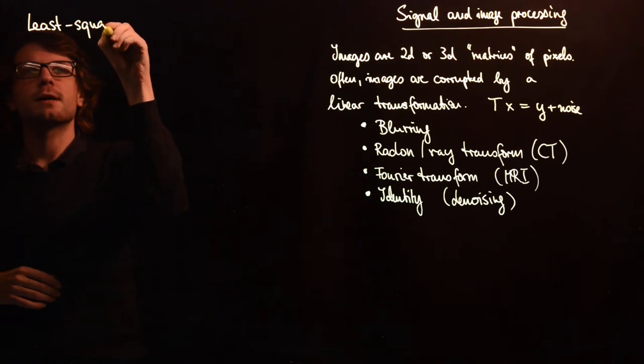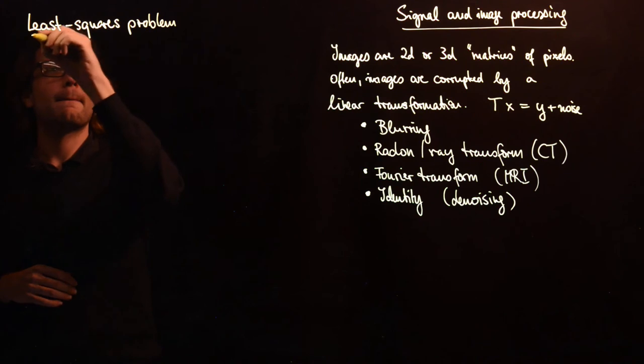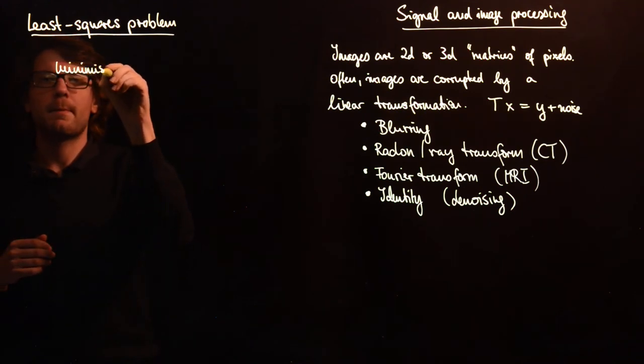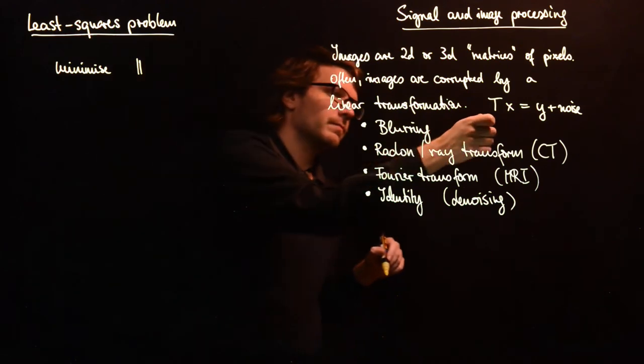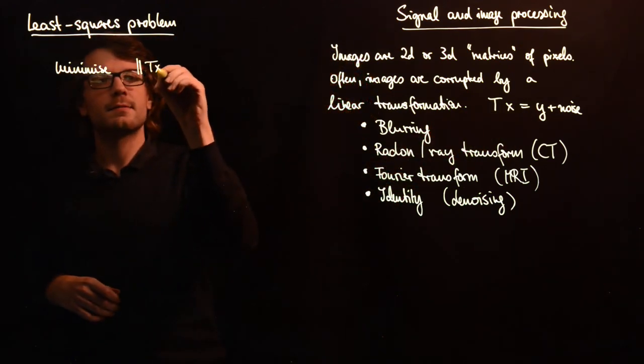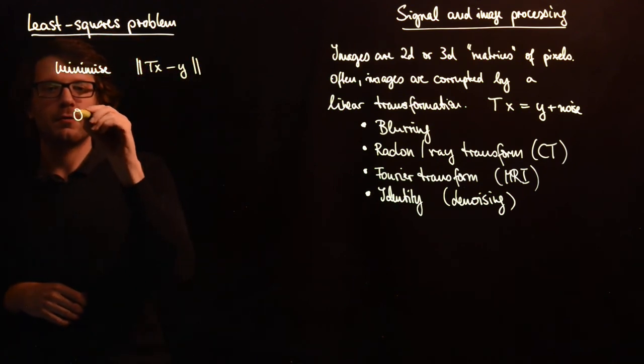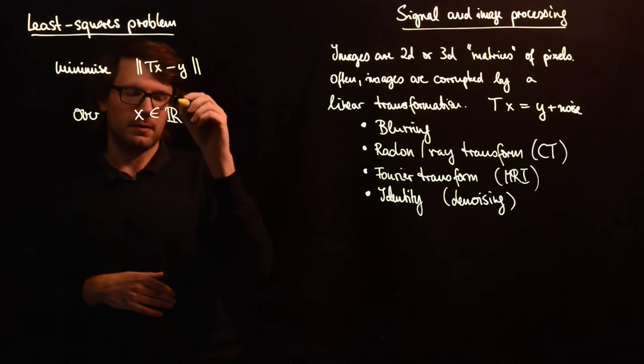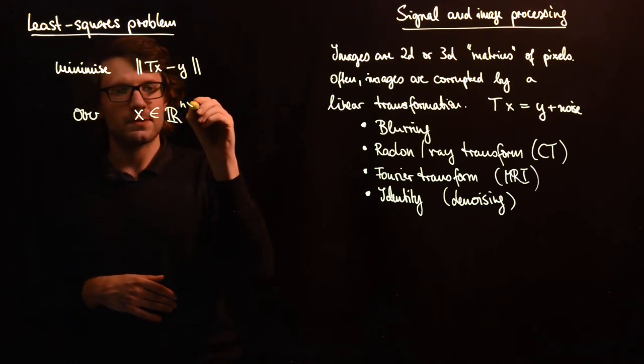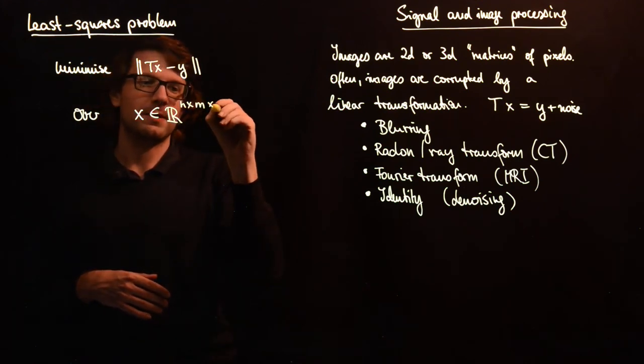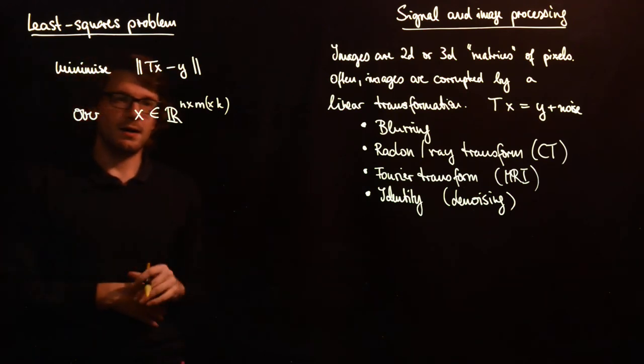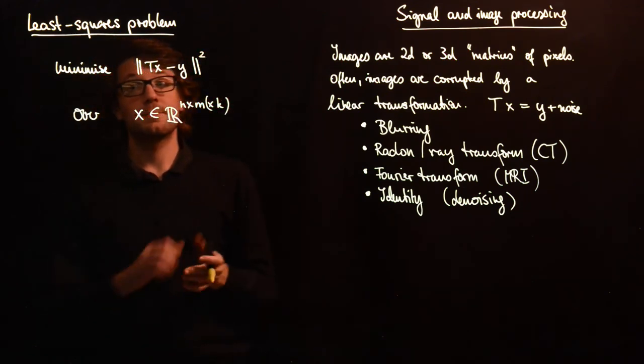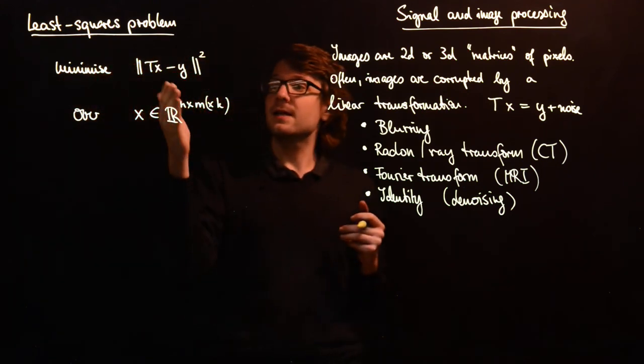The approach of choice would usually be to take a least squares problem. The least squares problem would be to minimize an expression here: you want to minimize TX minus y over x. X is the image, is usually some kind of real, for example you can take n times n or if you have a three-dimensional image you can also add a third dimension. You have the square here so you minimize this.